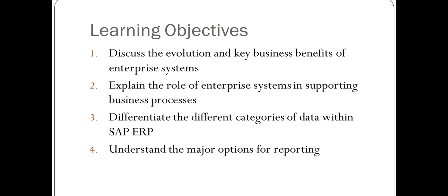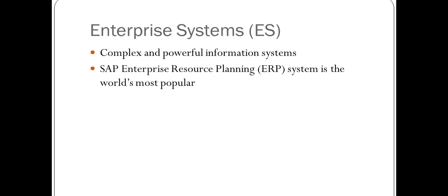Enterprise systems basically allow an enterprise-wide system to be built into one single IT system so that each business function and business process we talked about in Chapter 1 can communicate on a real-time, synchronous, seamless basis. SAP is the most widely used and popular ERP or enterprise system in the world.